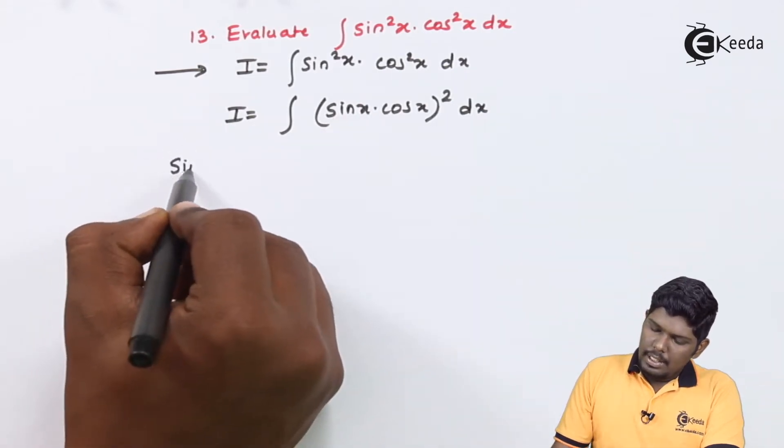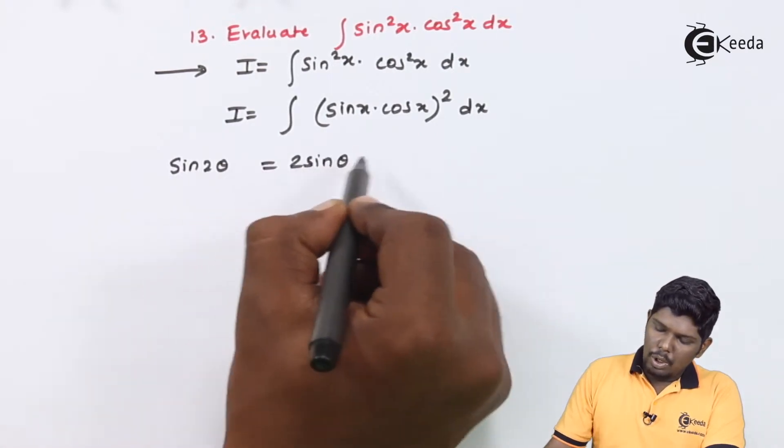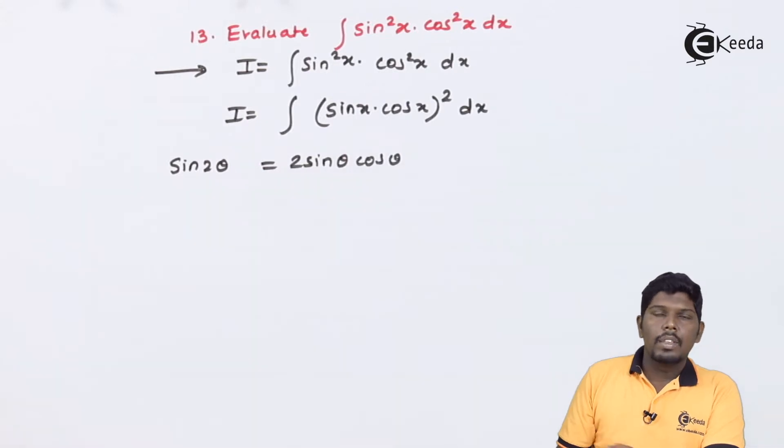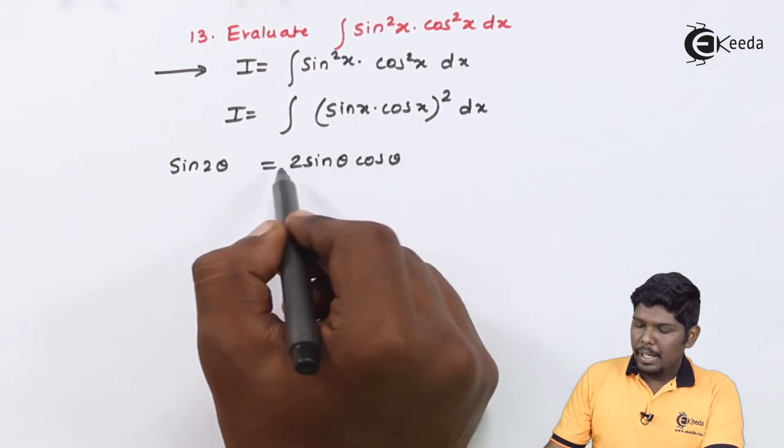We know that sin 2θ is 2 sin θ cos θ. Here you can see we have sin θ, we have cos θ but 2 is missing.